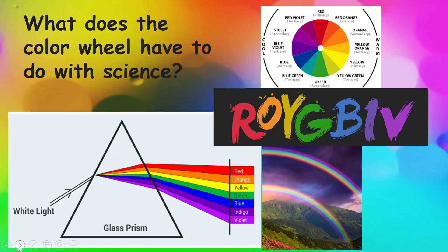So what does color have to do with science? Well, everything. Because color is science. It has to do with how our eyes see the wavelengths of color. White light is made up of all the colors of the rainbow.